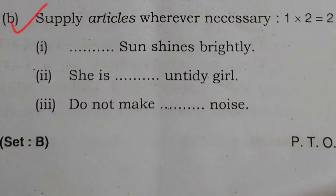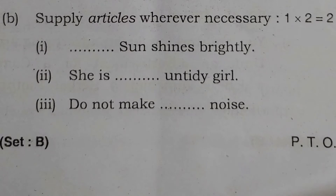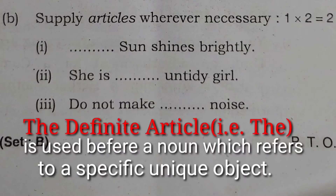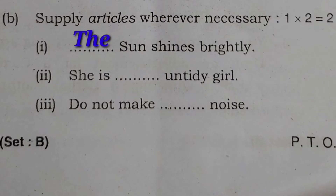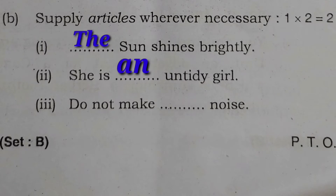Now we will solve Part B - fill in the articles. The first sentence is: 'Dash sun shines brightly.' Bacho, the definite article is used before a noun which refers to a specific unique object. Sun is a unique object, toh yaha par aayega 'the' - 'The sun shines brightly.' The next one is: 'She is dash untidy girl.' Untidy starts with a vowel sound, isliye 'an' - 'She is an untidy girl.' The third one: 'Do not make dash noise' - yaha par aayega 'a' - 'Do not make a noise.'